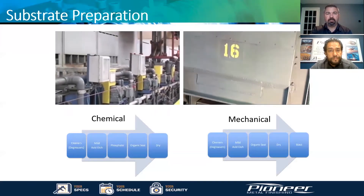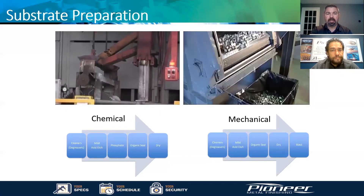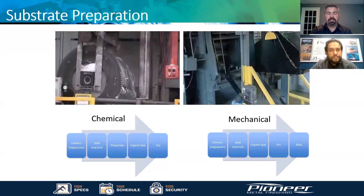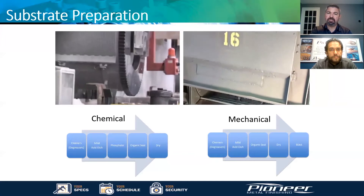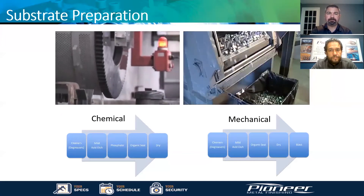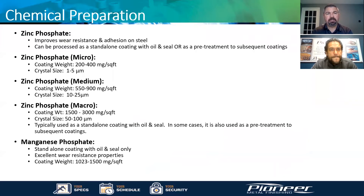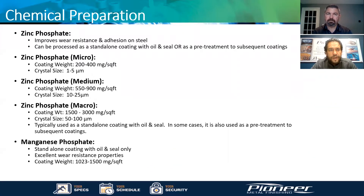Let's go on to the next slide where we elaborate a little bit more into each of the zinc phosphating materials and the different levels of zinc phosphate, which is more towards the steel type of part. Pablo, do you want to touch on the overall aspect of zinc phosphate and then touch on the micro, medium, and macro phosphates — when they can be used, the advantages and disadvantages of each, and then a brief comment on manganese phosphate?